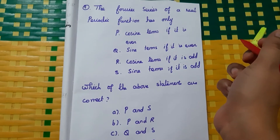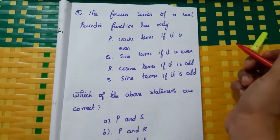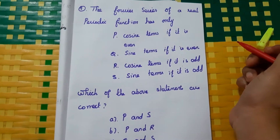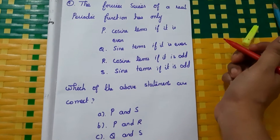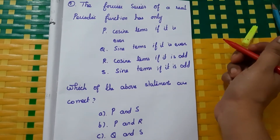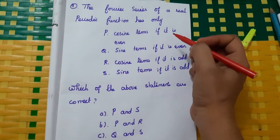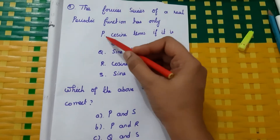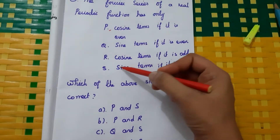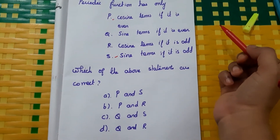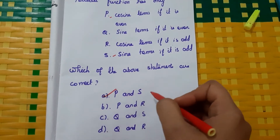First question: the Fourier series of a real periodic function has only cosine terms if it is even, and sine terms if it is odd. So the correct answer is A — both P and S.